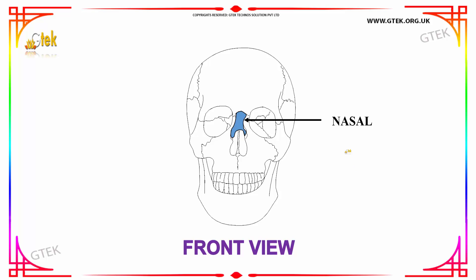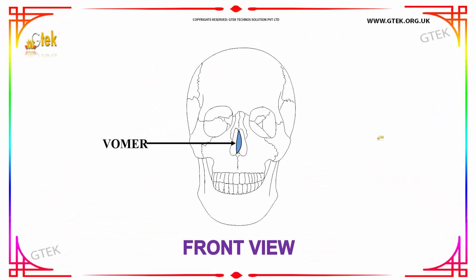Next we have the nasal bone in the front view of the human skull. The image that you are seeing is the front view which shows the vomer bone.